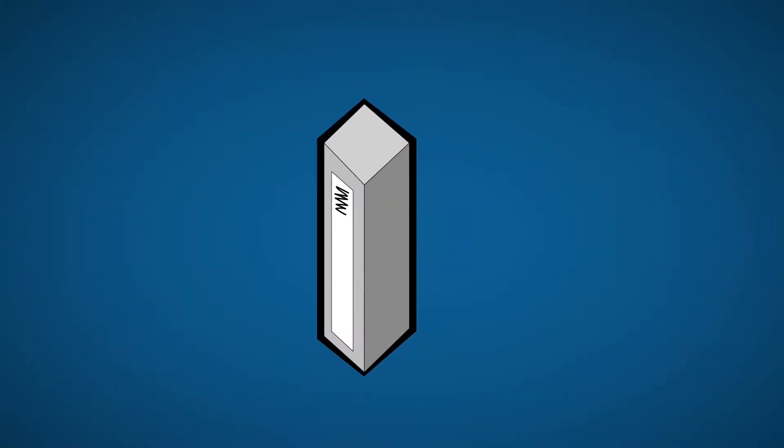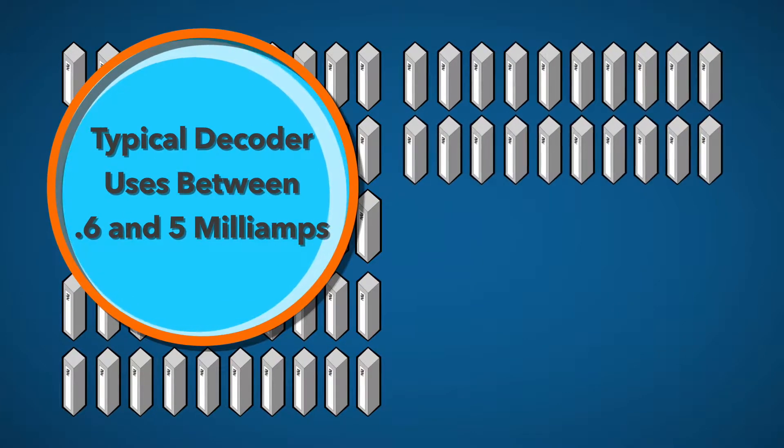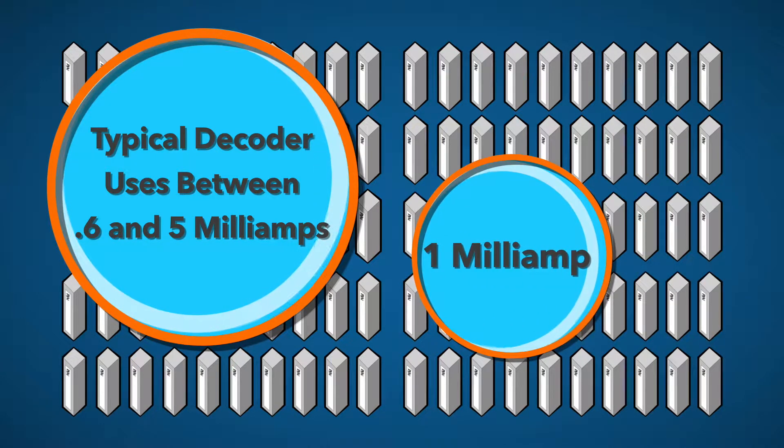In this sample system, there are 100 decoders in the path. The typical decoder will use between 0.6 and 5 mA. This will vary by brand, of course, so let's say that these use 1 mA.